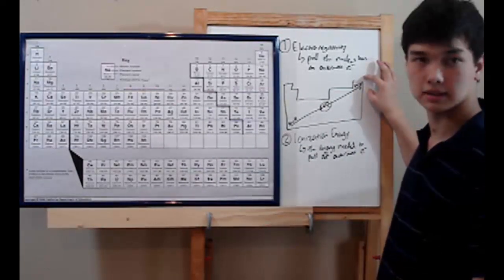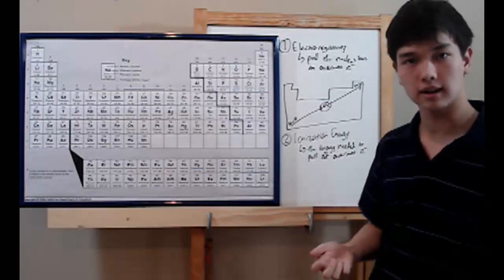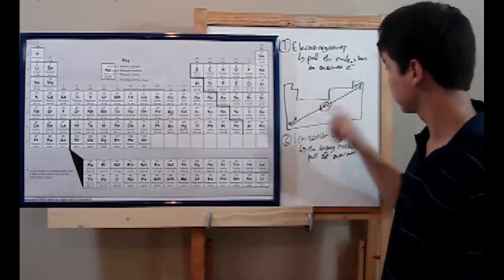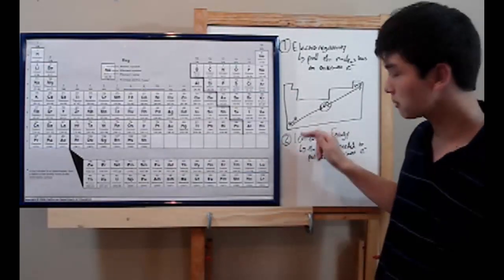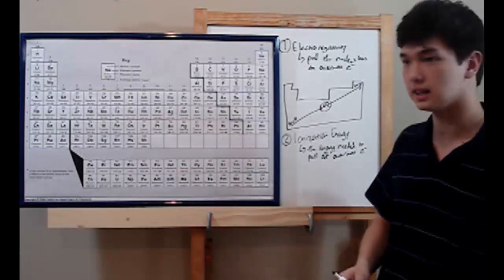So over here, where the pull is the strongest, it's going to be the hardest to pull that outermost electron off. Down here, when it's the smallest, it's going to be easiest to pull it off. So less energy needed.